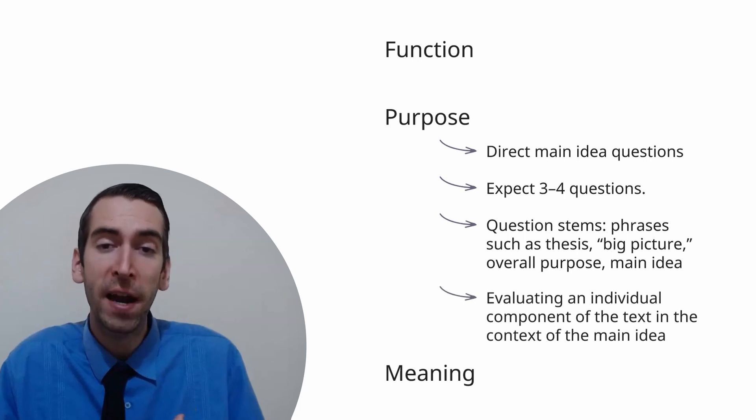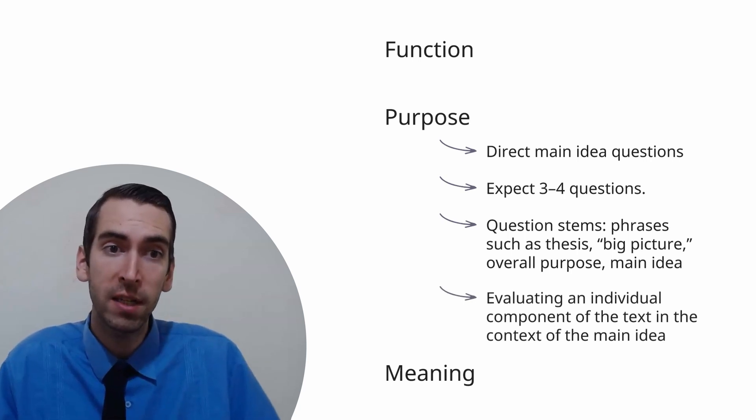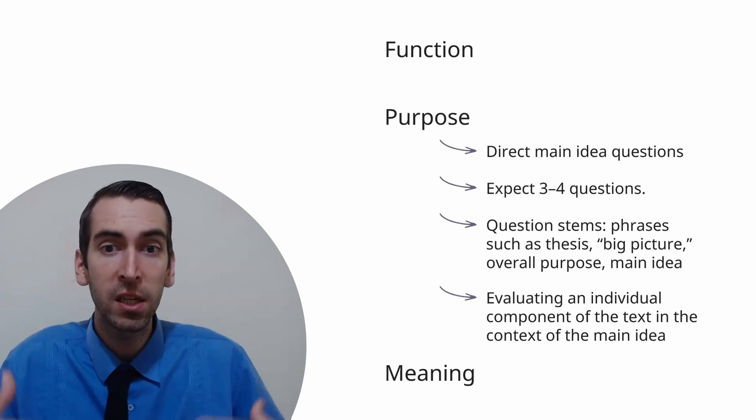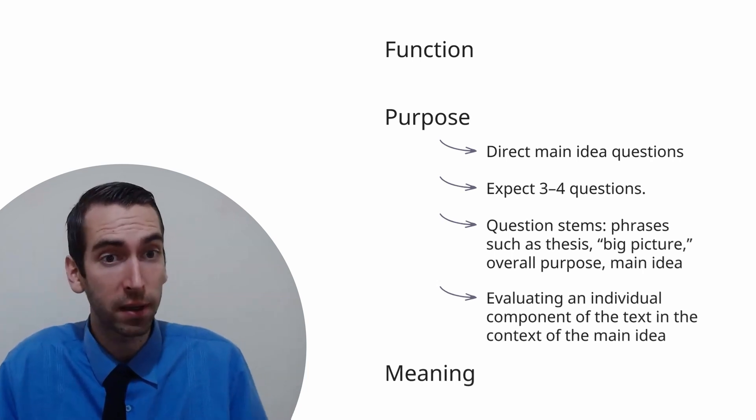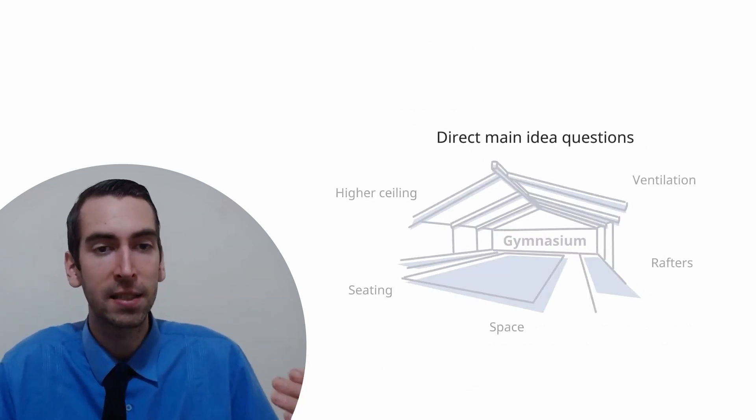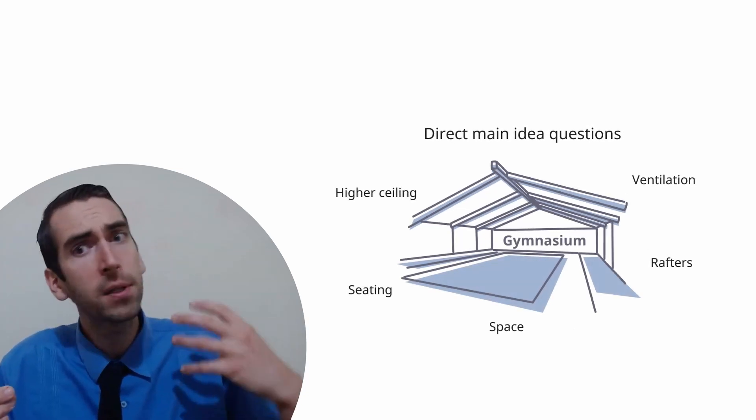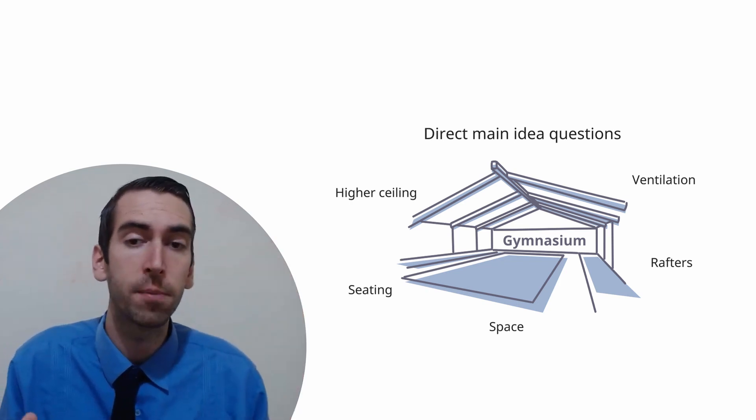Other questions will ask you to evaluate an individual component of the text in the context of that main idea. Let's continue to imagine a CARS passage as a building, but in this case as a gymnasium. First, let's just ask ourselves a question. What purpose do the rafters serve in a gymnasium?